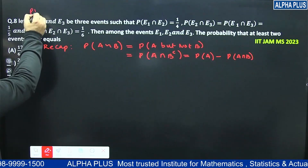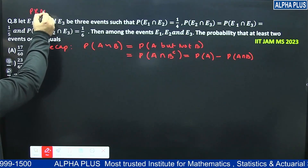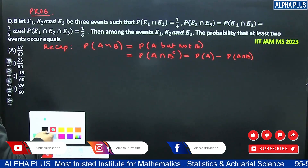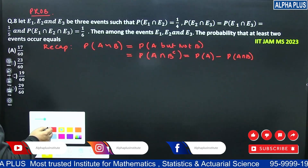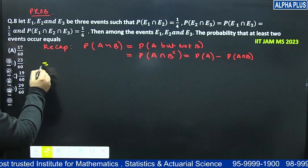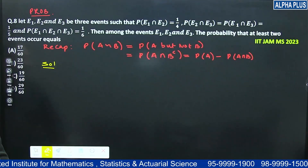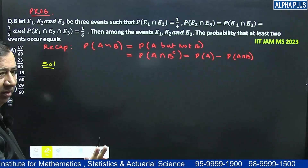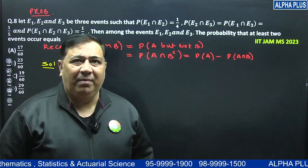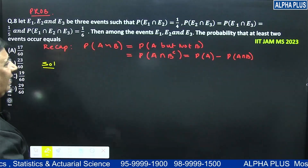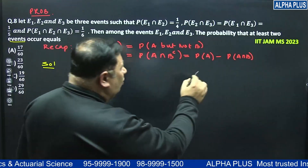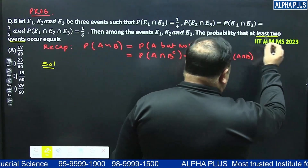Question 8 is a probability question — and there is negative marking. We have to find the probability that at least two events have occurred. At least two means two and three.